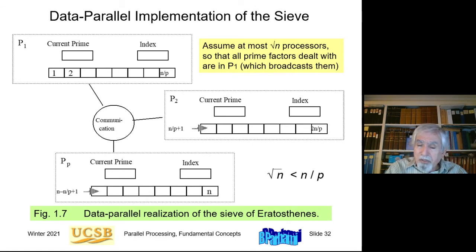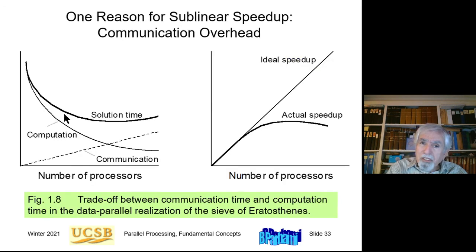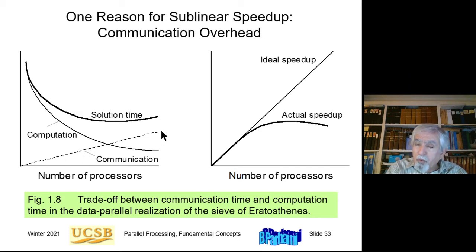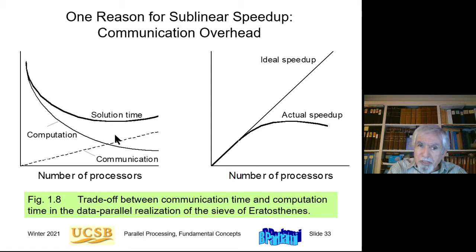Unfortunately, communication has some overhead, so perfect speedup is not achieved in practice. As we add more processors, computation per processor decreases but communication overhead increases. Therefore, solution time — the sum of computation and communication time — eventually increases beyond a certain number of processors, giving diminishing returns. Beyond that point, too much communication overhead makes the solution worse.